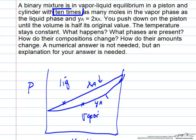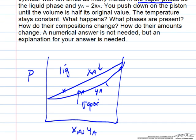It says we have 10 times as many moles in the vapor phase. So that means our actual starting condition is here, close to the vapor phase. Lever rule would tell us that we're more than 90 percent of the way across between the liquid and the vapor.